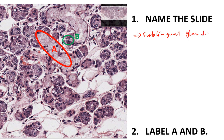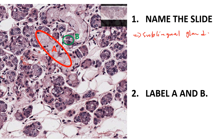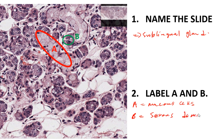Label parts A and B. Part A consists of mucus cells. Part B is serous demilune — these are the cells here.